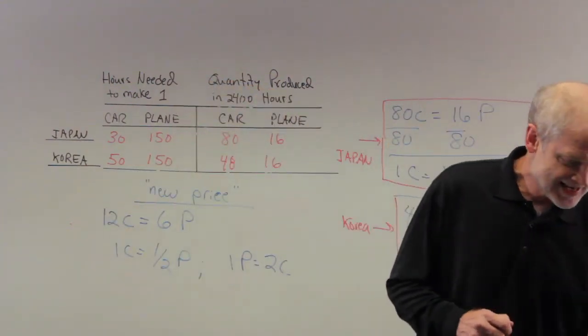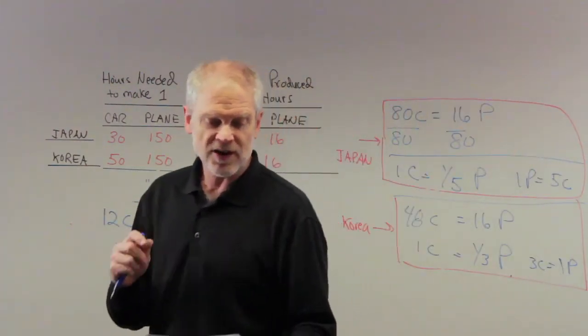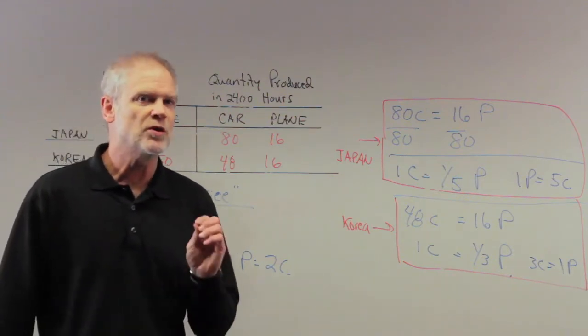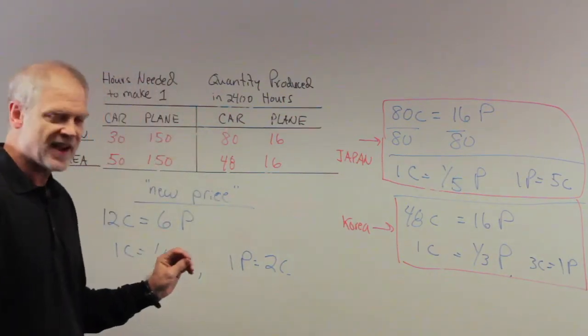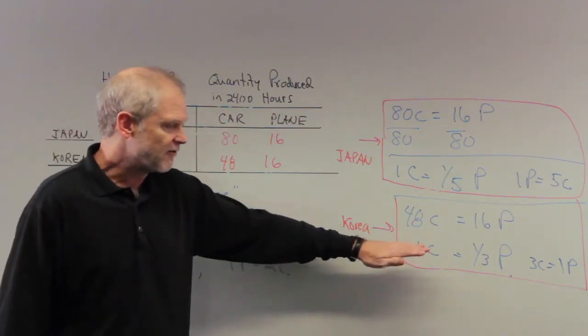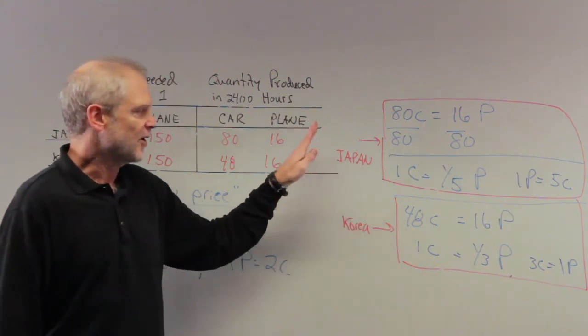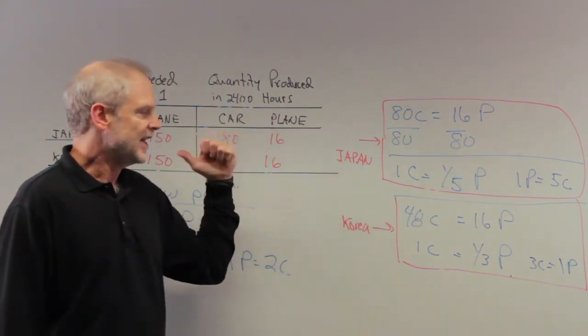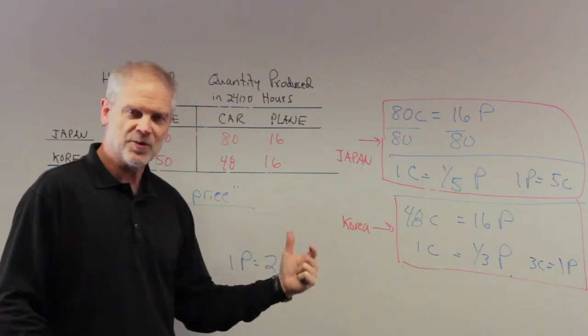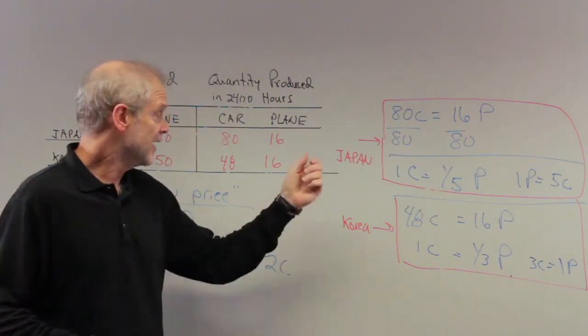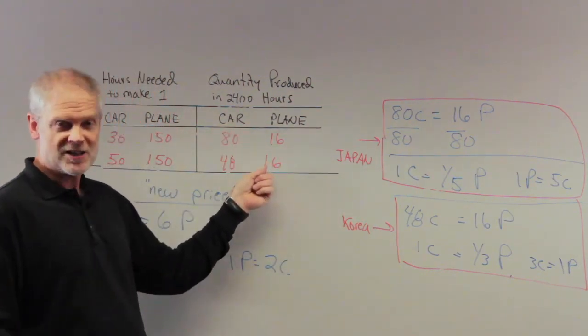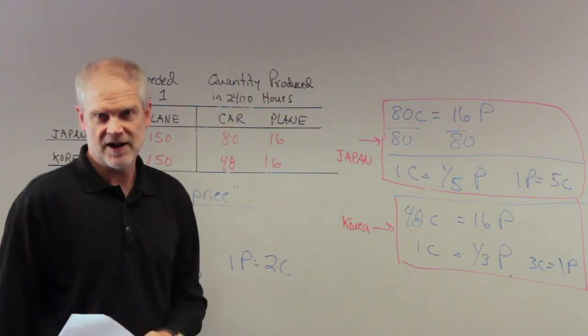The answer is B, Japan will gain from this trade, but Korea will not. And hopefully I've made that clear. The price got really terrible for Korea, it got really good for Japan, and Japan would gain, Korea would not. Korea would probably stop trading and, again, not specialize and start to produce cars by itself.